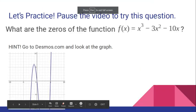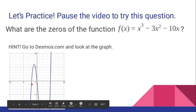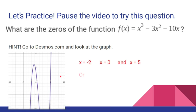Here's the picture of that graph again. The zeros are at negative 2, 0, and 5. This is what it would look like in set notation.